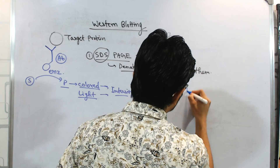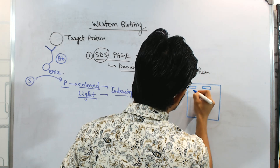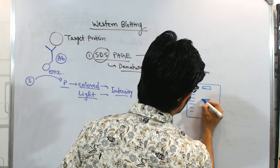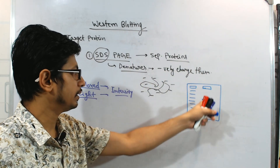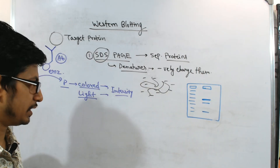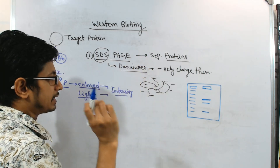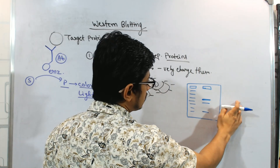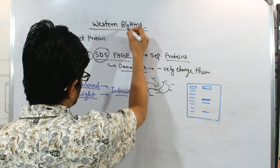After SDS-PAGE, we can separate the proteins. We have the ladder as a reference, and we find the band pattern in our target well. The very first step is treating the lysate with SDS, and the second step is running the polyacrylamide gel electrophoresis. After electrophoresis is done, comes the ultimate idea of blotting.